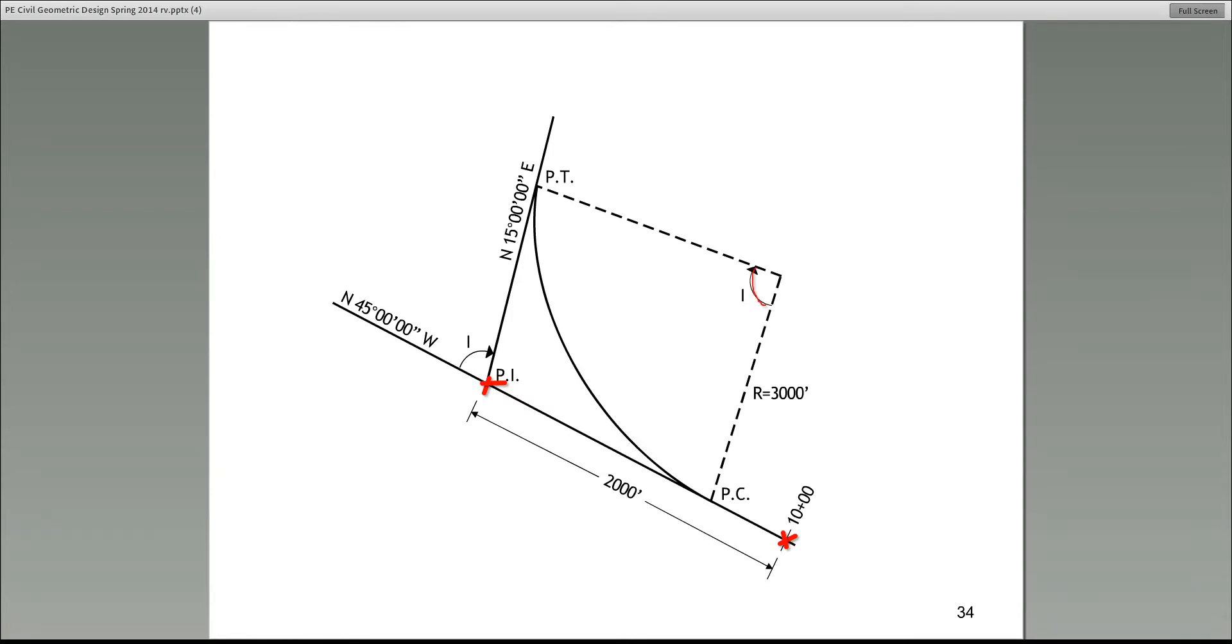And of course, they give you the bearings of both the back tangent and the forward tangent. And guys, here it is. Please make a note. This is the central angle. A lot of people get confused about the degree of curvature and the central angle. I'm going to explain it right now. So please pay attention so you don't ask me to repeat it.